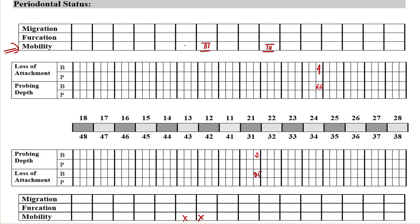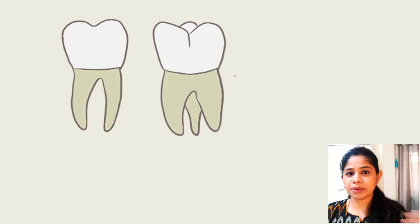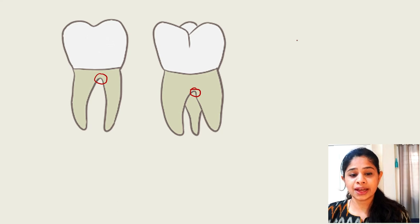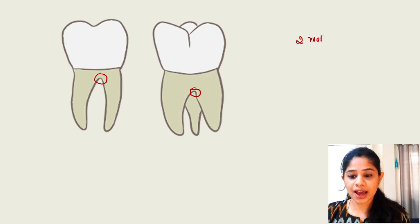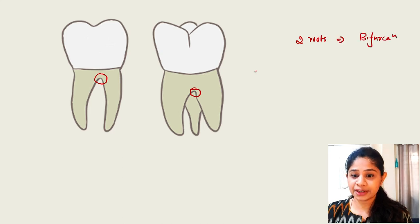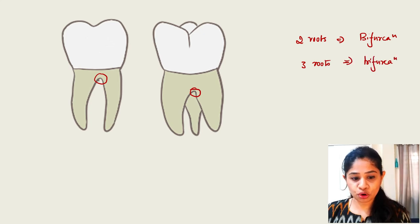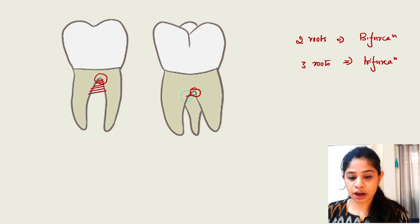Next, let's talk about furcation. Furcation is nothing but the place where the root divides. If it is a tooth like the lower molar which has two roots, it is called a bifurcation. If it has three roots like the upper molars, it is called a trifurcation. If there is a certain amount of bone loss seen in the furcation area, it is termed furcation involvement.